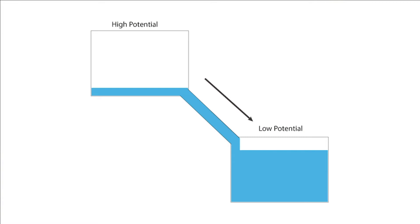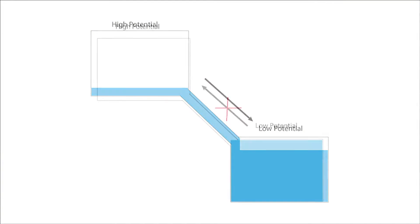Once the higher tank is completely empty, water won't flow back upwards on its own. This is because water cannot flow from an area of low potential energy to an area of high potential energy, at least not without help.